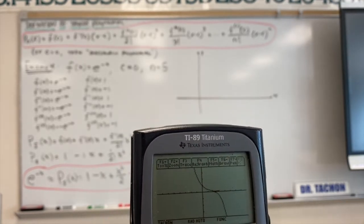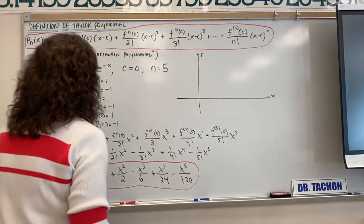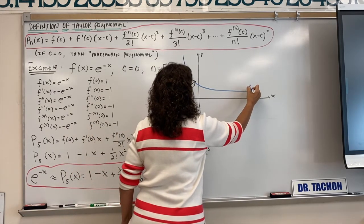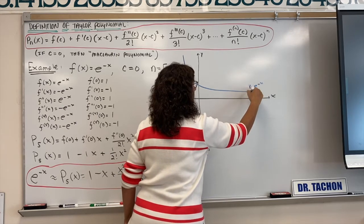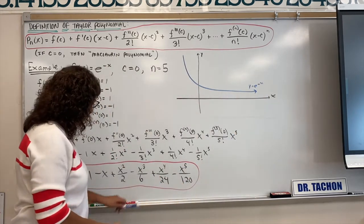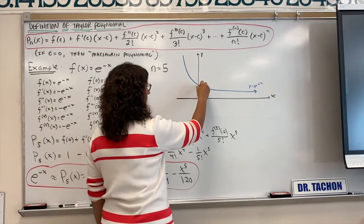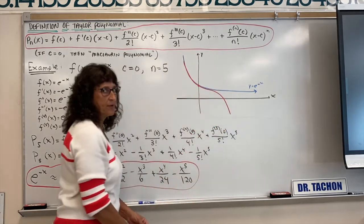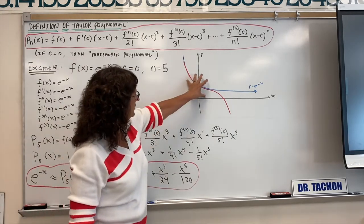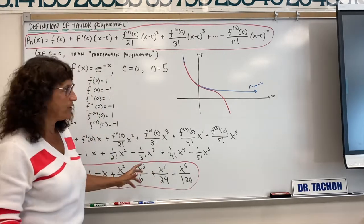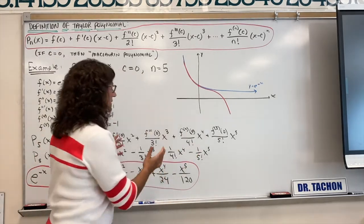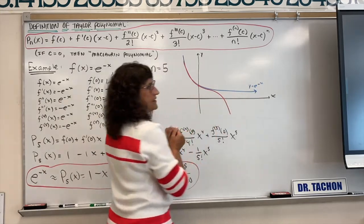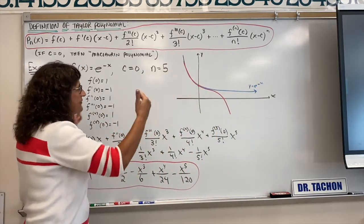Let me sketch on the board what we just saw. E to the negative x comes in like this — this is our transcendental function. The polynomial approximation, centered at zero, is right on target near zero, but then it broke away. We only have a finite number of terms in our polynomial. If you want the polynomial expression to cover the entire domain of e to the negative x, the more terms you have, the more of the domain you'll cover. You would actually need infinitely many terms.